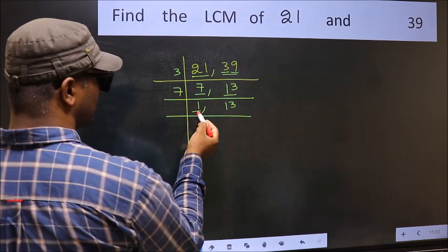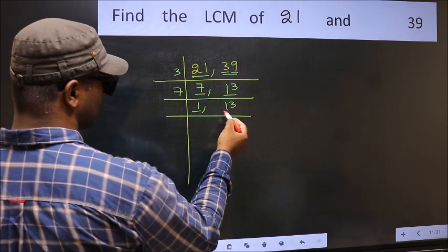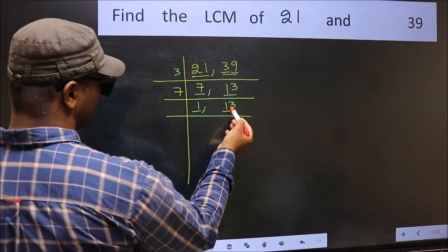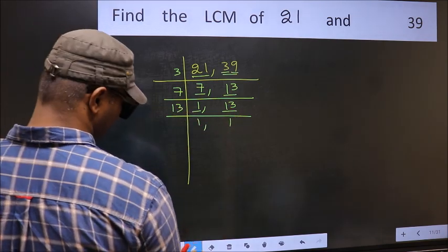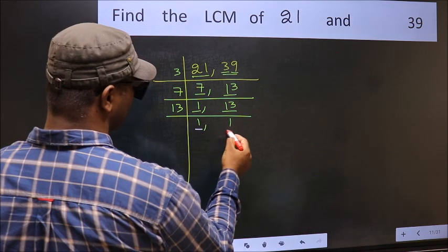Now we got 1 here. So focus on the next number 13. 13 is a prime number, so 13 ones is 13. So we got 1 in both places.